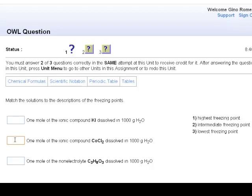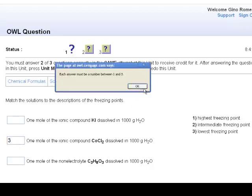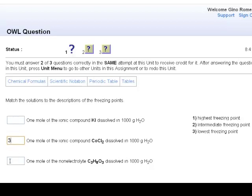So cobalt chloride has an N of 3, so that would drop the freezing point the most. So we're going to write that would be 3, the lowest freezing point. And the highest freezing point, meaning closest to zero, would be this one here, and this is number 2.